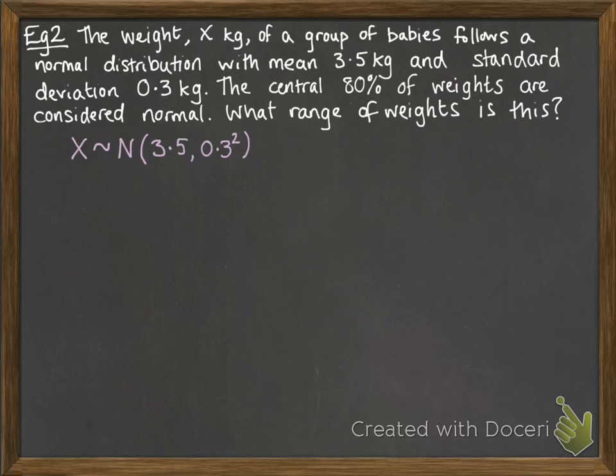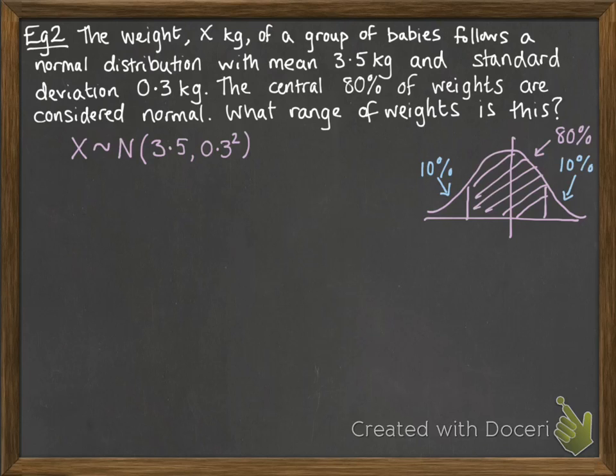So x follows the normal distribution, and it's going to look like this. We want that middle 80%. So to do this, we need to figure out what those outside values would be to make that middle bit 80%. So we'd have 10% on either side.